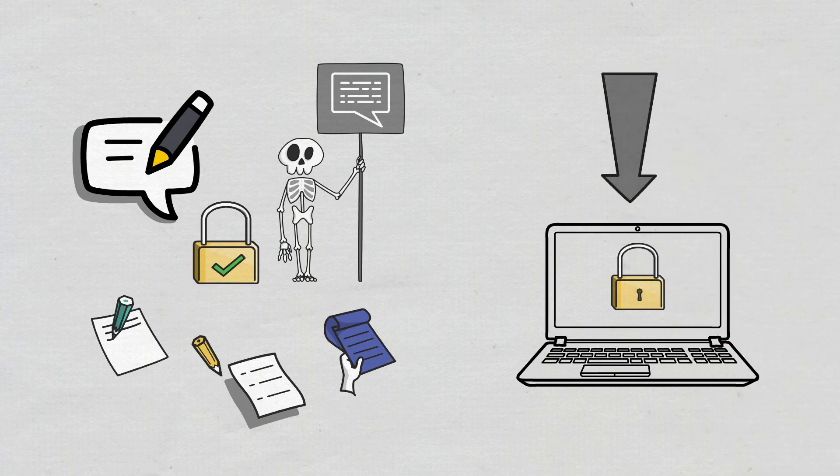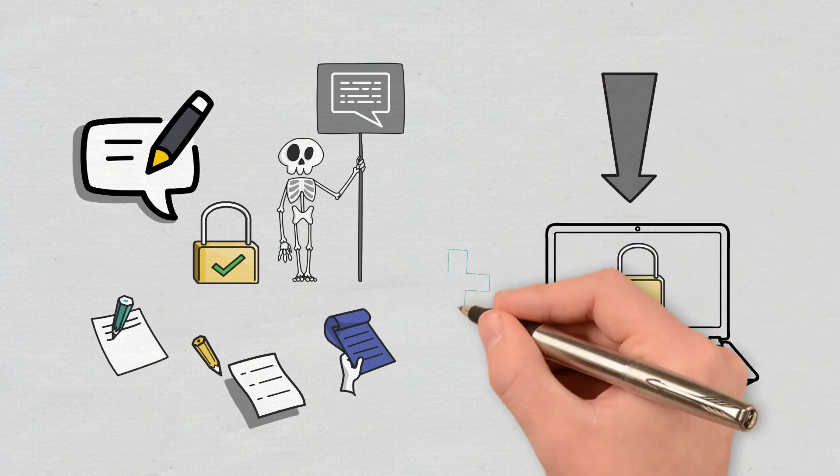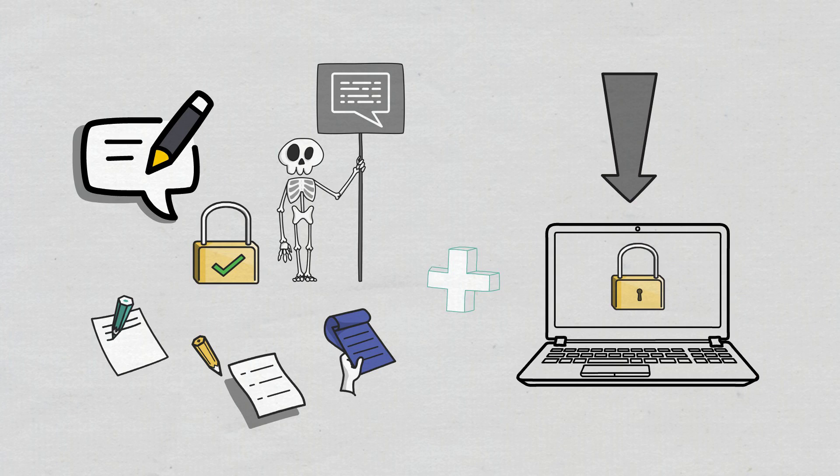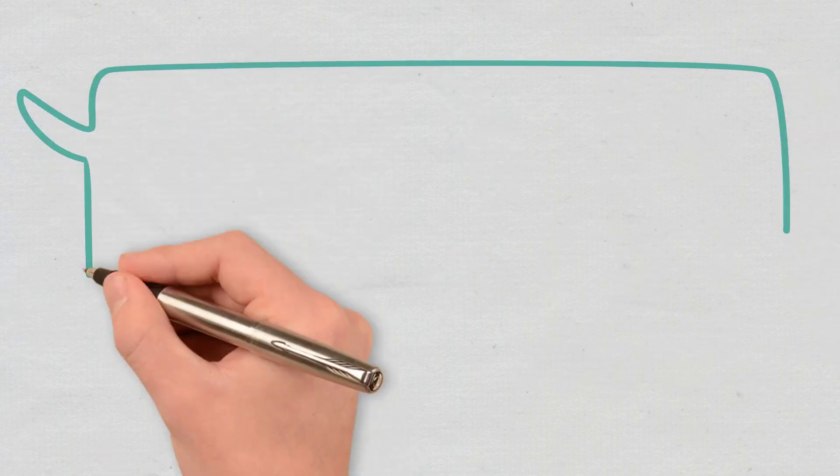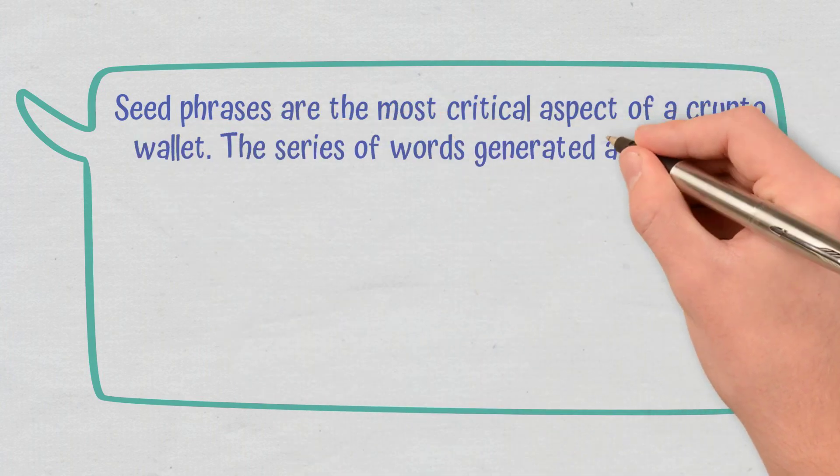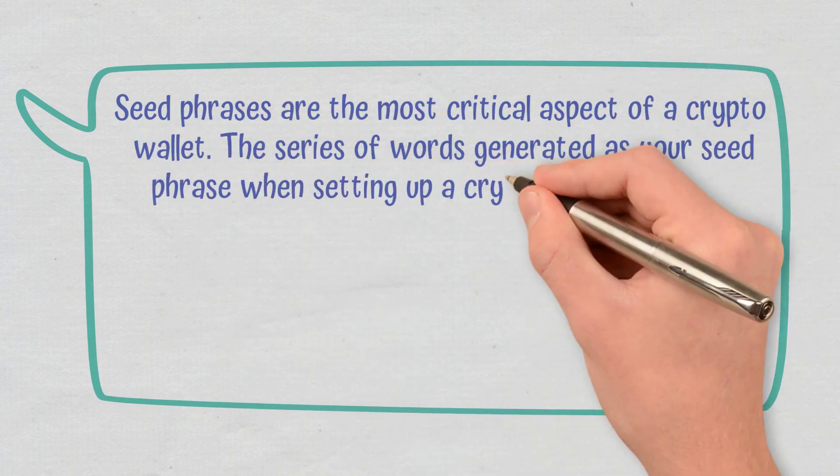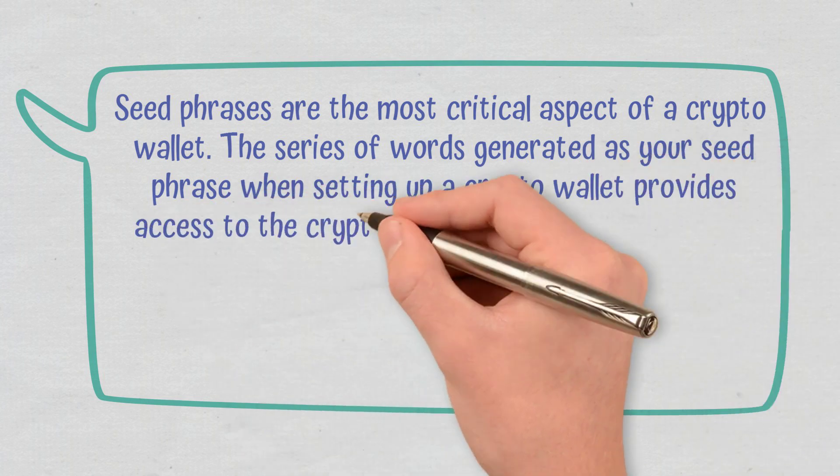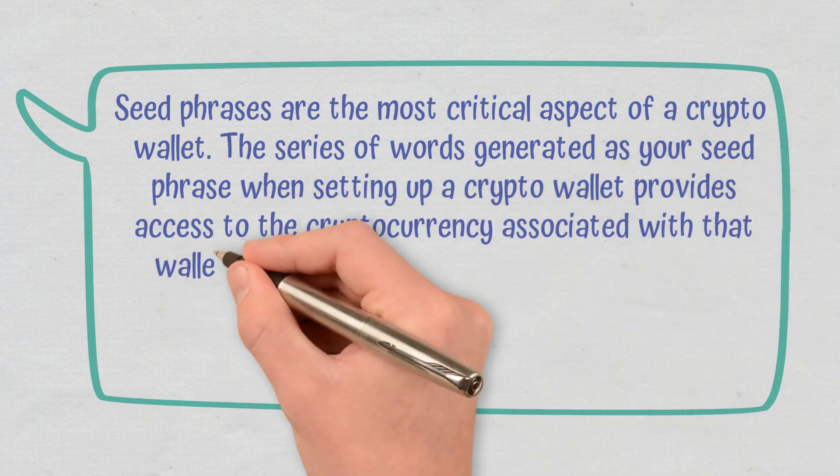If you do opt for encrypting and storing it on a device, it is always best to also have it physically stored somewhere. Conclusions. Seed Phrases are the most critical aspect of a crypto wallet. The series of words generated as your seed phrase when setting up a crypto wallet provides access to the cryptocurrency associated with that wallet.